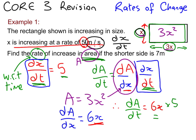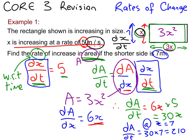So that means dA by dt, the rate of change of area with respect to time, is 30x. That's not the question done because it says when the shorter side is 7. So this is the shorter side, x is 7. At x equals 7, you're going to be doing 30 times 7, which you can all do because 3 times 7 is 21. So it's 210. Let's give some units: rate of change of area, so metre squared per second.